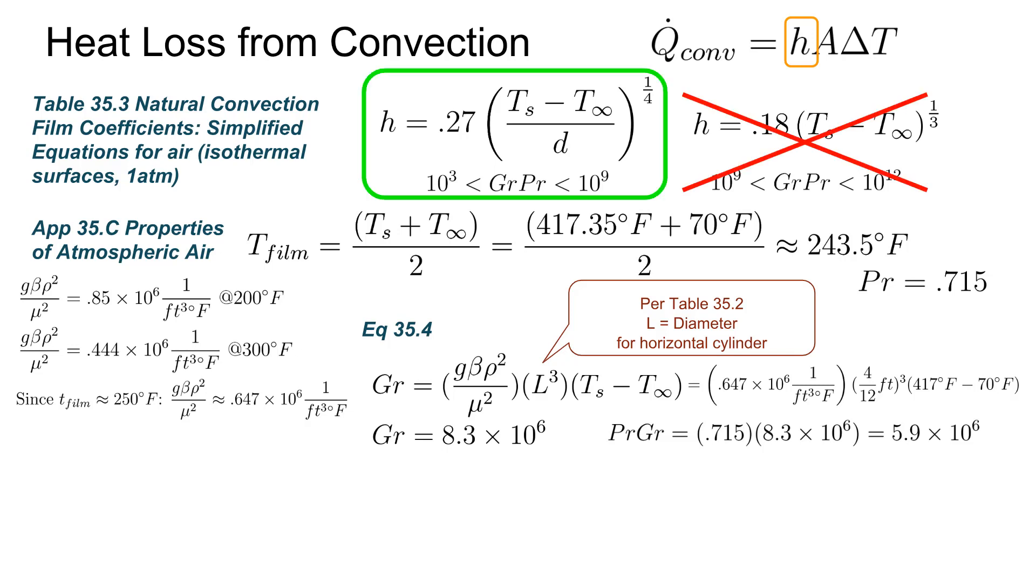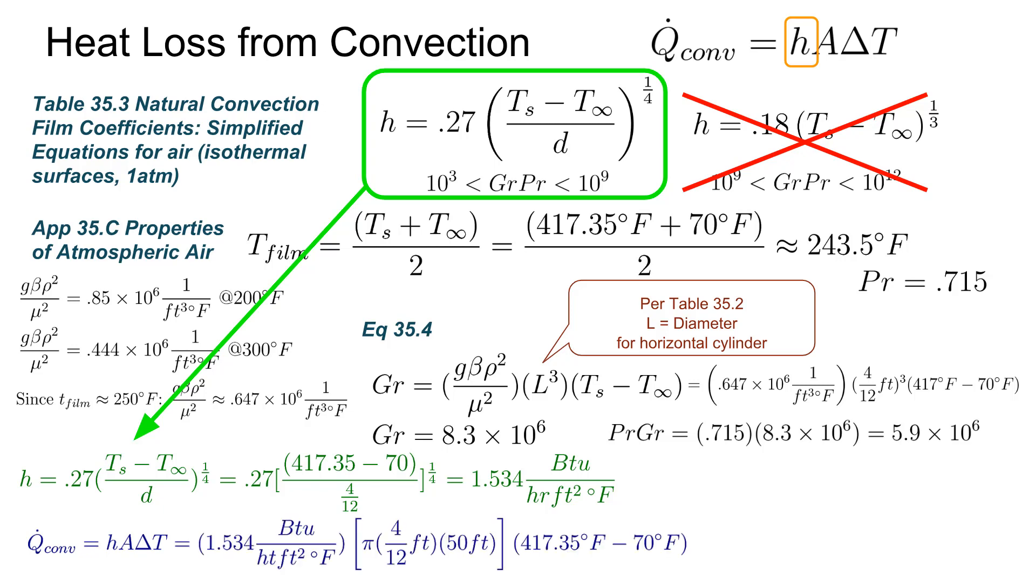We can plug in for the temperatures and diameter, all of which are known, and we get a film coefficient of about one and a half BTU per hour foot squared degrees F. And finally we can find the heat loss from convection, which is the one and a half times the area, which as before is the surface area of the pipe, pi dl, and all of that times the delta T. And we get a heat loss of 27,900 BTUs per hour, which is actually a bit less than the radiation heat loss, but both are similar contributions.